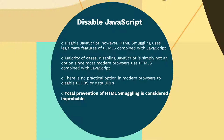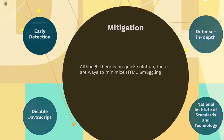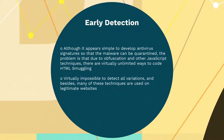Therefore, total prevention of HTML smuggling is considered improbable. The second method is early detection. While it appears simple to develop antivirus signatures so the malware can be quarantined, due to obfuscation and other JavaScript techniques, there are virtually unlimited ways to code HTML smuggling.